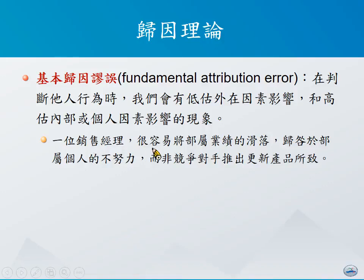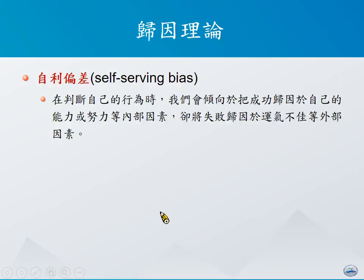例如有一个销售经理，有时候很容易把一个部属业绩的下滑当作是这个部属的努力程度不够，却可能忽略掉事实上今天的业绩下滑是来自于对手推出了更好、更便宜的产品而造成的。在很多时候，我们在归因的时候也会发生很多的错误，例如可能会发生所谓的自利偏差（Self-serving bias），泛指当我们在判断自身行为的时候。